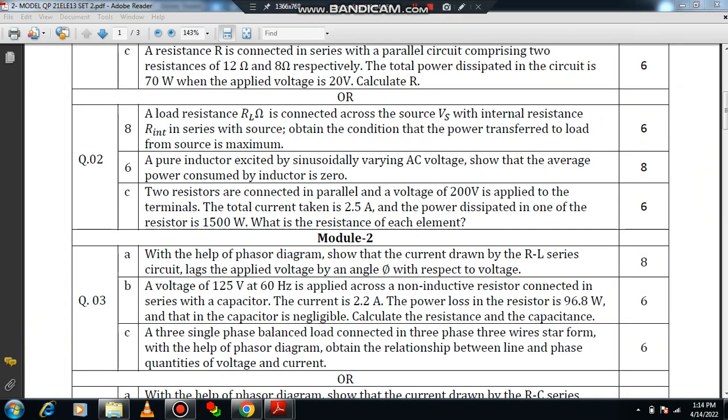Everybody please look at question number 2. A load resistance RL ohm is connected across the source Vs with an internal resistance of Rint in series with the source. Obtain the condition that the power transfer to the load from the source is maximum. What is the meaning of the question? You have to derive an expression for the maximum power based on maximum power transfer theorem. It carries the weightage of 6 marks. But steps are required. I will be showing you how to solve this particular question.